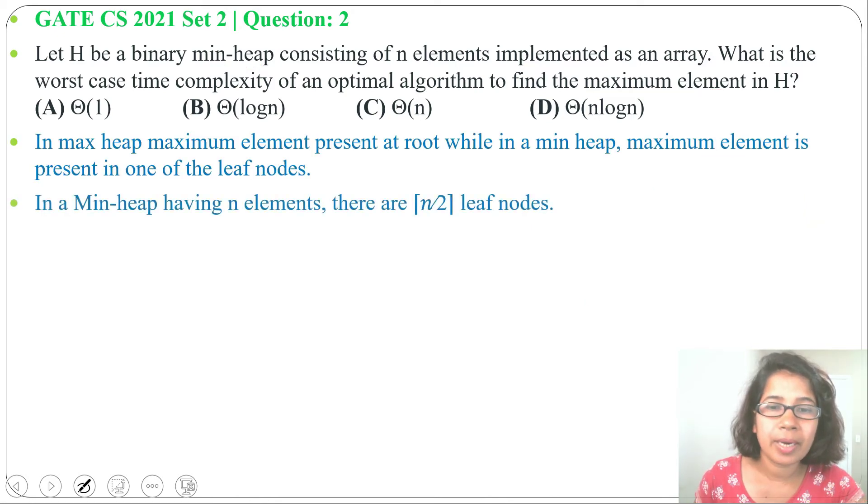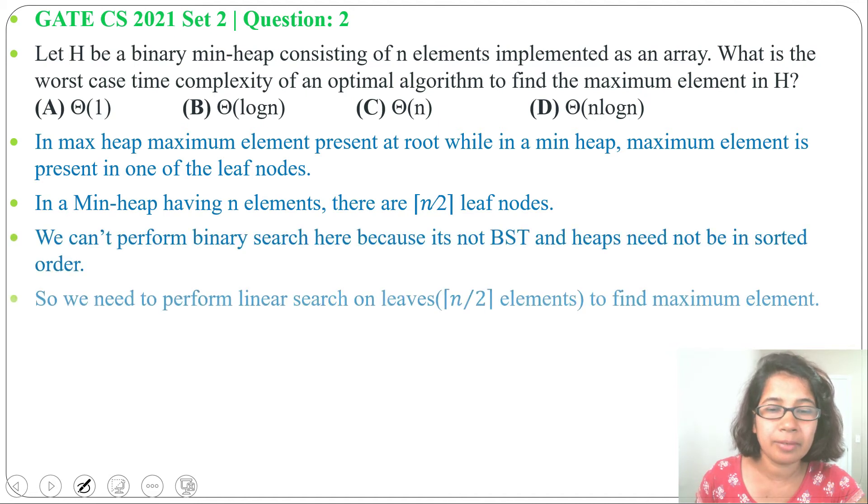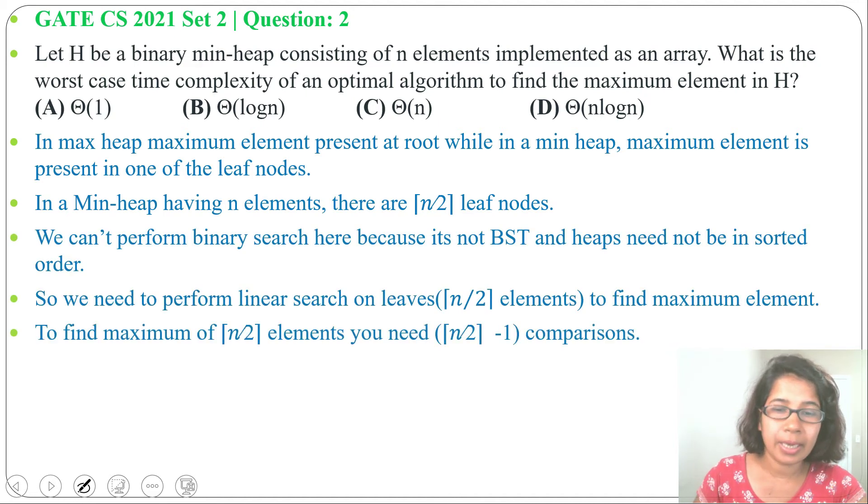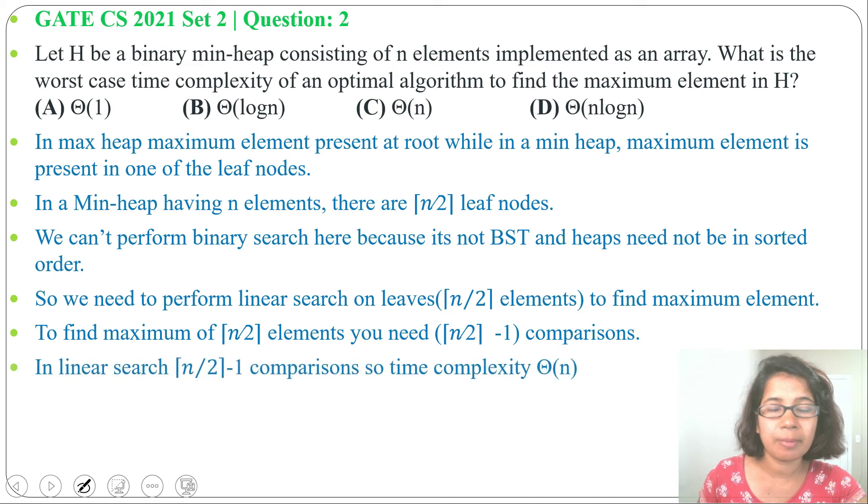So first we will find how many numbers of leaves are there and we will find maximum element from the leaf. For that we need n divided by 2 minus 1 comparison. Running time is theta of n. Answer is option C.